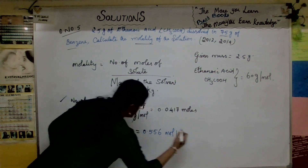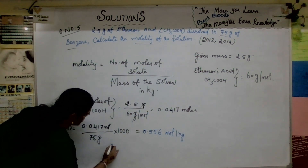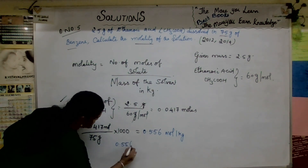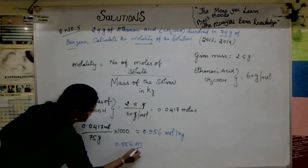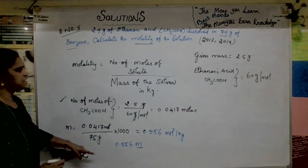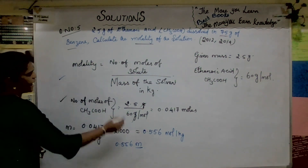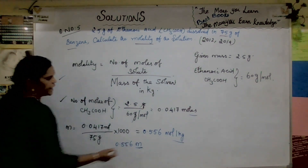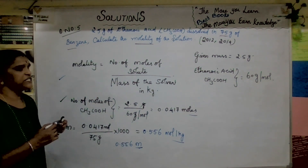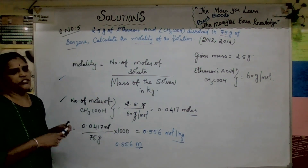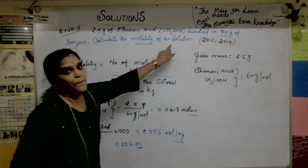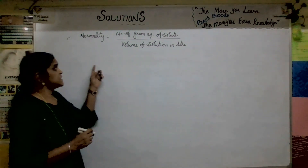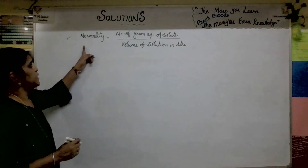The answer is 0.556 m (molality). Units are very important. Now let us go to another important question on normality.